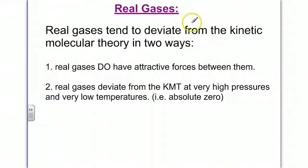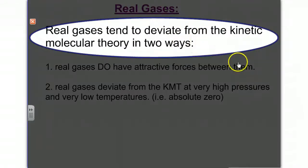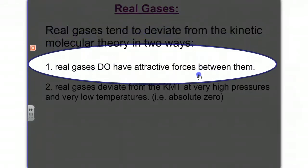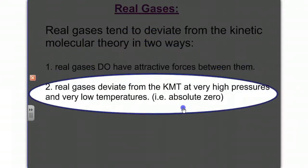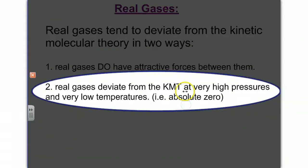Real gases will tend to deviate from the kinetic molecular theory in two specific ways. First, real gases do actually have attractive forces and repulsive forces between them. And real gases will deviate from the kinetic molecular theory at extremely high pressures and very low temperatures, such as absolute zero.